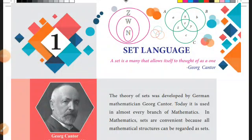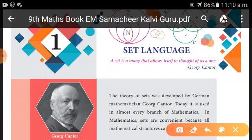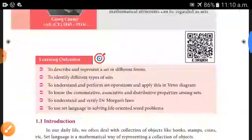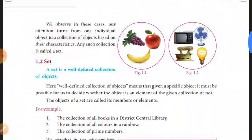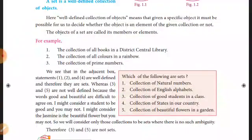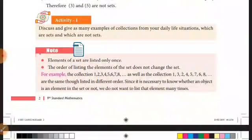Hello students, welcome to class. In last class we learned that a set is a well-defined collection of objects. We also noted that elements of a set are listed only once — for example, if an element appears two or three times, the set still counts it as one element.